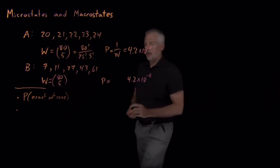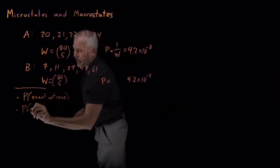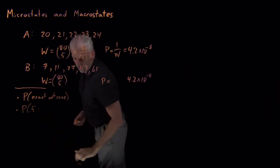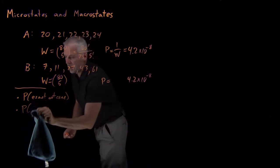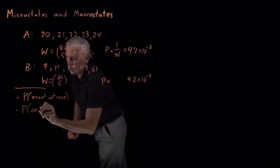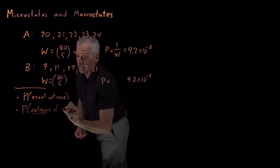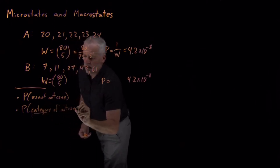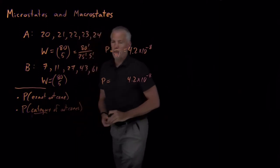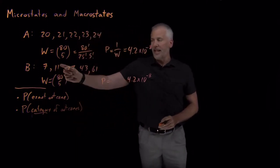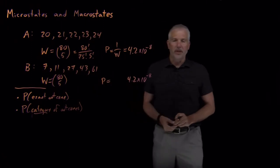And he might have been interested in the question, let's say, he wasn't really interested in knowing what's the probability that the lottery numbers were going to be a 7 and an 11 and a 27 and a 43 and a 61.